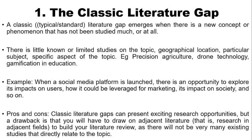The classic literature gap — sometimes called a typical or standard literature gap — emerges when there is a new concept or phenomenon that has not been studied much or at all. There is little known or limited studies on that topic. It could be a geographical location, a particular subject, or a specific aspect of the topic. Examples include precision agriculture, drone technology, or gamification in education.